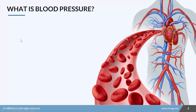First, let's talk quickly about what blood pressure is. There are three main parameters that we need to know: systolic blood pressure, diastolic blood pressure, and mean arterial pressure, or MAP.